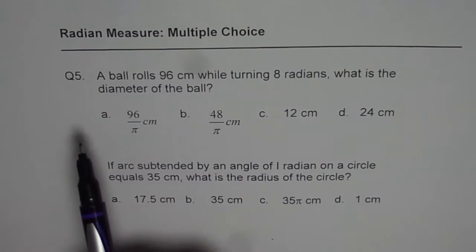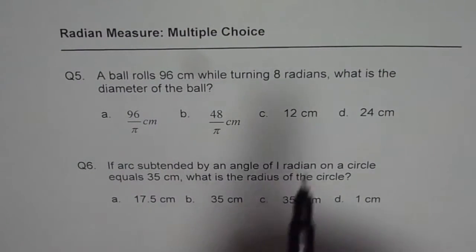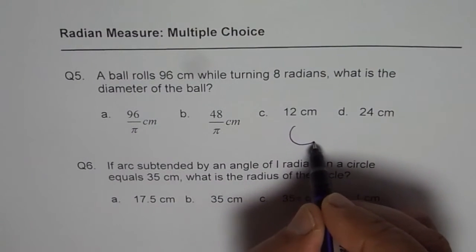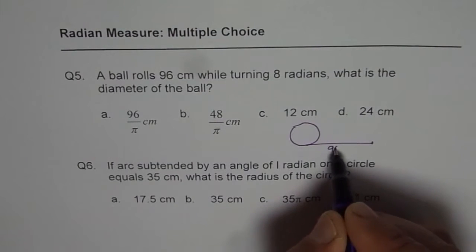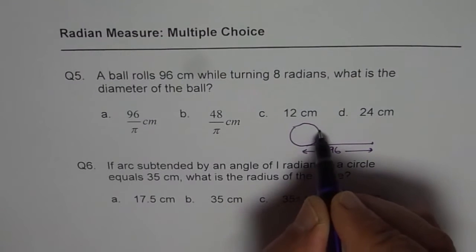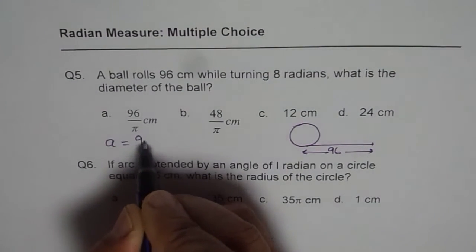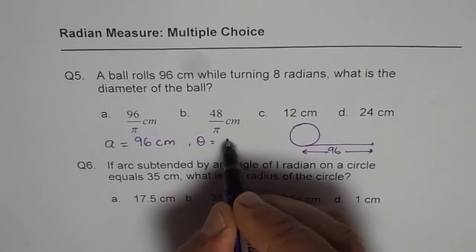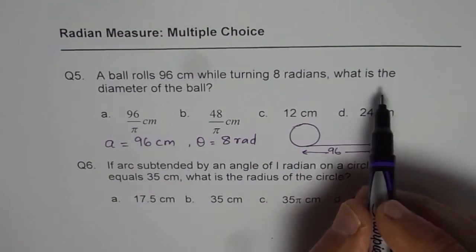Question number five: a ball rolls 96 cm while turning 8 radians. So what we are given here is the distance — if this is a ball, it is rolling 96 cm. So this distance of 96 cm is actually the arc length. We know arc length a equals 96 cm and the angle theta is 8 radians. What we need to find is the diameter.